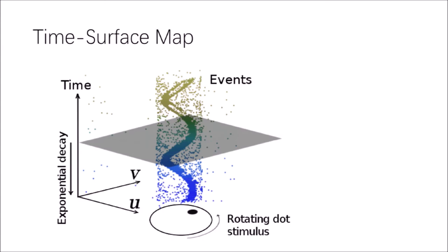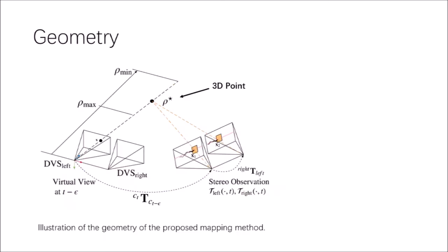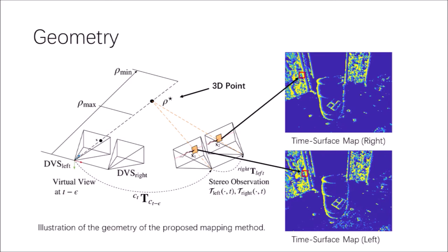To establish effective stereo data association, we create distinctive representation of events by advocating the use of time surface maps, which was originally proposed for event-based pattern recognition. A detectable 3D point in the overlapping field of view of the event cameras will generate an event on both left and right cameras. Ideally, these two events should spike simultaneously, and their coordinates should be corresponding in terms of the epipolar geometry defined by both cameras. This property actually enables us to view the data association based on the stereo temporal consistency.